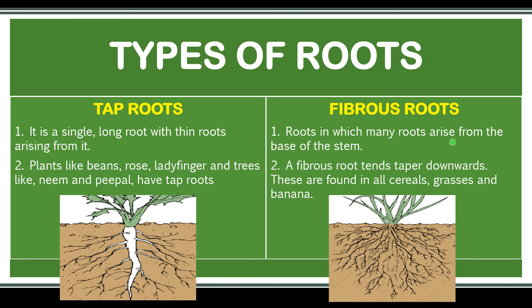Fibrous roots are roots in which many roots arise from the base of the stem. A fibrous root tends to taper downwards. These are found in all cereals, grasses, and banana.